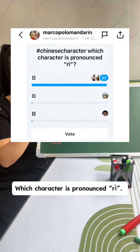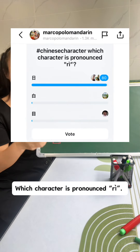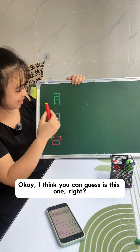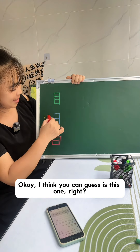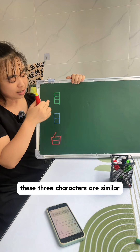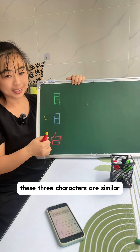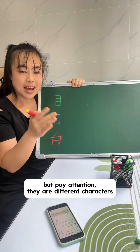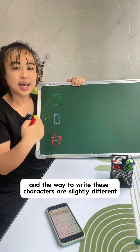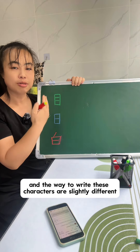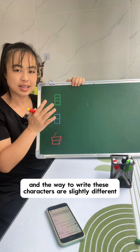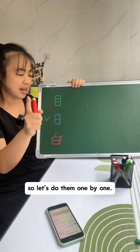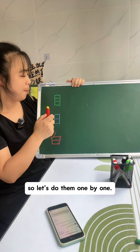Which character is pronounced 日? I think you can guess it's this one, right? These three characters are similar, but pay attention — they are different characters and the way to write them are slightly different. So let's do them one by one.